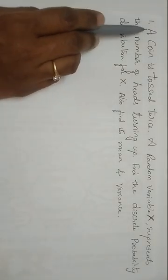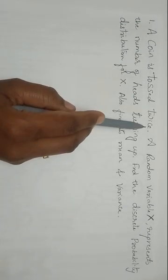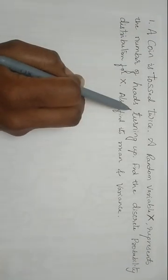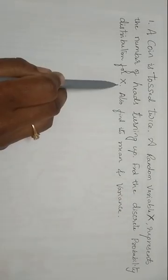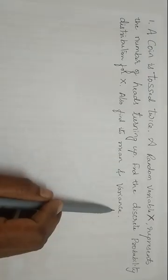The problem is: a coin is tossed twice. A random variable represents the number of heads turning up. Find the discrete probability distribution for X. Also find its mean and variance.